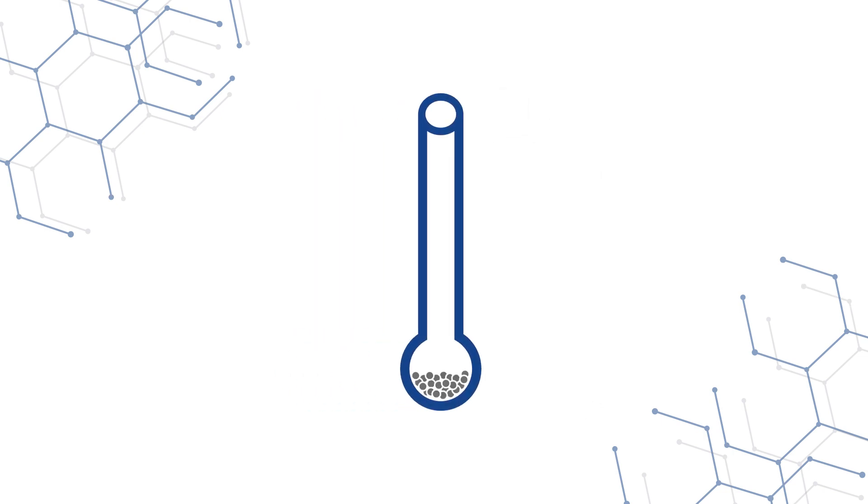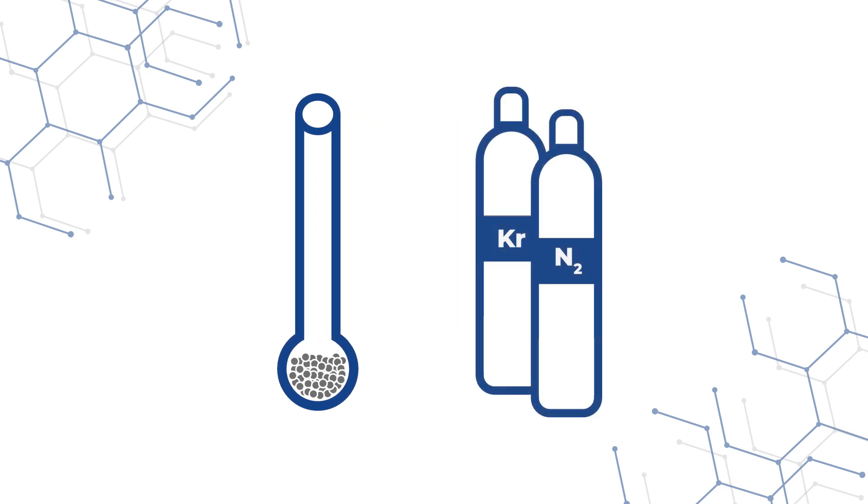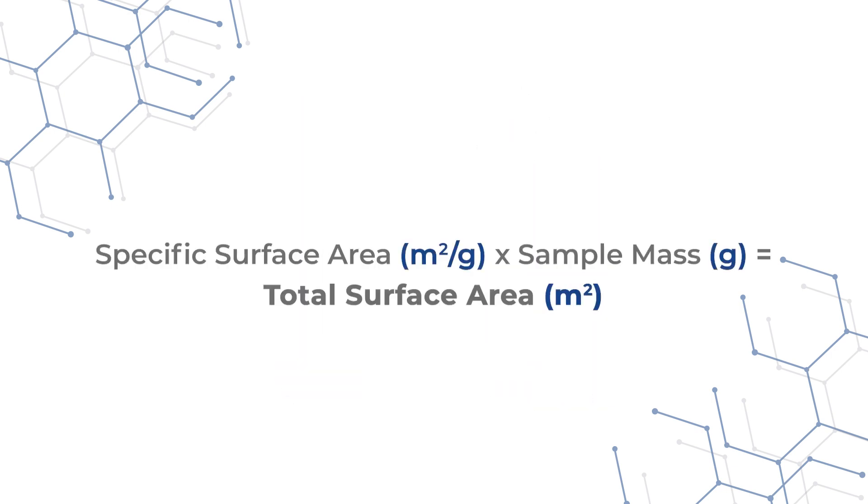First, how much sample is available. This helps to determine which adsorptive gas can be used based on how much total surface area is available. The total surface area is calculated by multiplying the specific surface area by the sample mass.